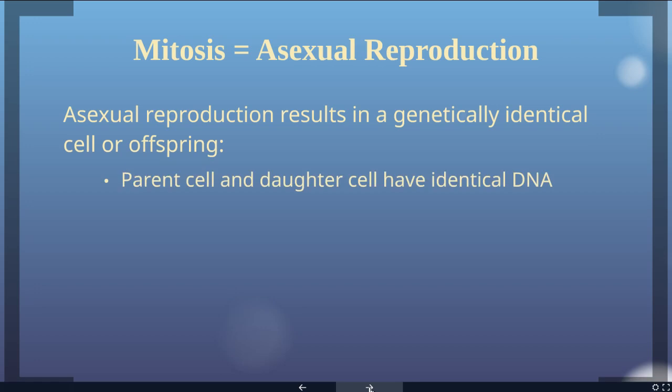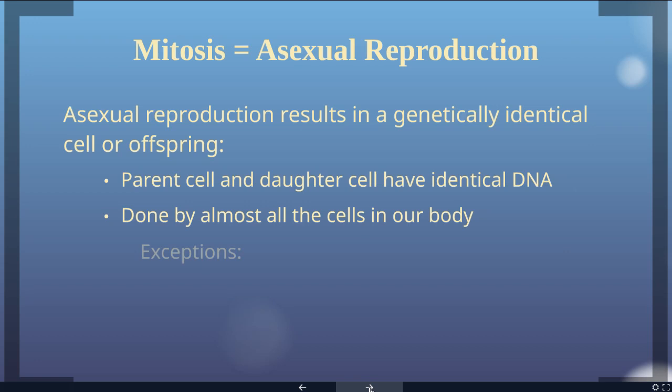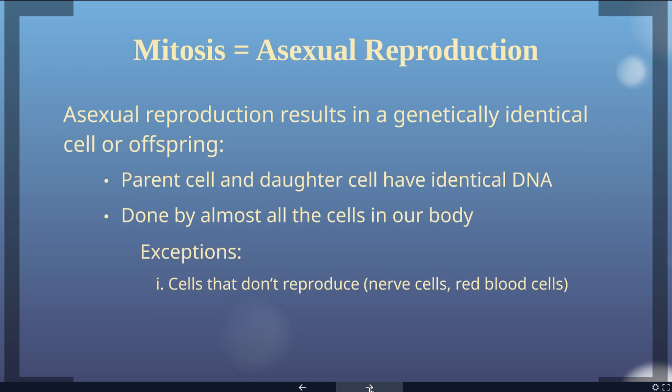The parent cell and the daughter cell will have identical DNA. Mitosis is going to be the kind of reproduction done by almost every cell in our body. There are a few exceptions — some cells just don't ever reproduce. Nerve cells will never go through reproduction at all; they stay in that G0 state.